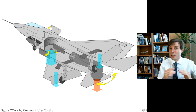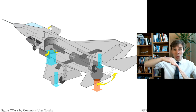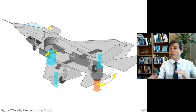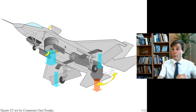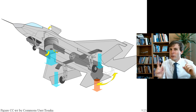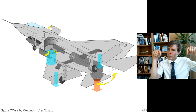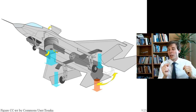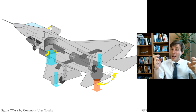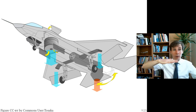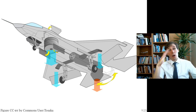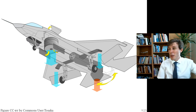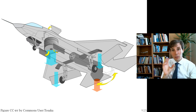Second, it must solve a moment equation: if the front fan pushes too much and the rear jet not enough, even if the forces together equal the aircraft's weight, if they are not balanced around the center of gravity the aircraft will pitch up or down and fall over.